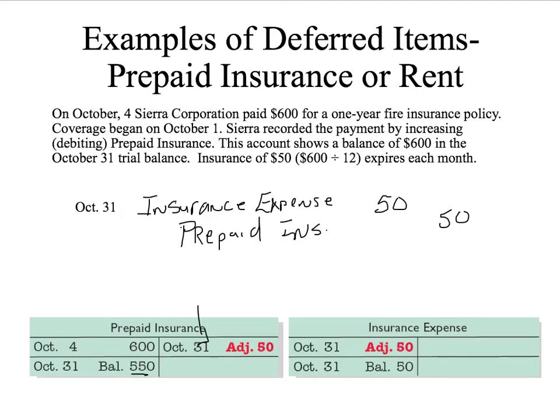When I post this, you can see that as of October 31st, I now have a remaining value of the asset of $550. And I recognize, in the month of October, an insurance expense. So we recognize the expense and we reduce the asset.